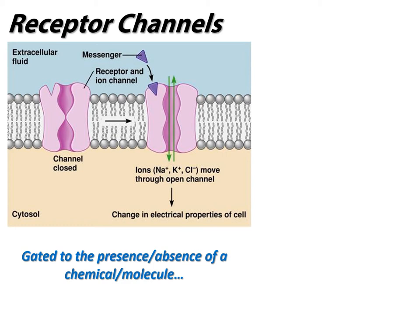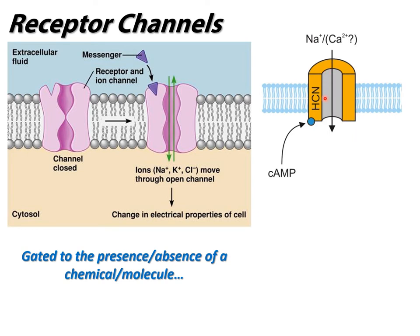This one here is gated to an extracellular first message; this other one is gated to an internal second message. What we'll see later in this chapter is mechanisms linking these together - for instance, a G protein coupled receptor may cause a second message that triggers this internally gated channel. So yes, this is a receptor channel, but oftentimes we see these internally gated receptor channels as the effectors of the cell - the response - rather than the initial signal receptor.